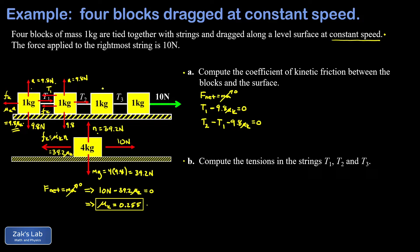The pattern is quick to recognize. Block 3 has T3 to the right, T2 to the left, and the same friction: T3 minus T2 minus 9.8μk equals zero. Block 4, all the way on the right, has 10 newtons to the right, T3 to the left, and 9.8μk to the left: 10 minus T3 minus 9.8μk equals zero. We now have a system of four equations and four unknowns: μk, T1, T2, and T3 — the answers to all the questions in the problem.